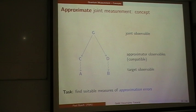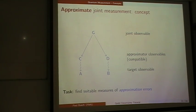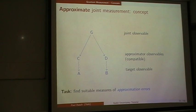It's the task of finding compatible approximators C and D for target observables A and B that are incompatible. Compatibility between them guarantees that there is a joint observable for C and D, so that one can get a joint approximation in one measurement scheme — one single measurement scheme — and measure position and momentum to whatever good degree of approximation. So we need a way of formulating the constraint of compatibility and we need suitable measures of approximation errors.